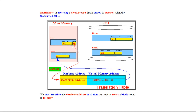If we look at the diagram, in the memory, when we require some object and we need to navigate from this object to the next object, we go to the database address, find the database address, and go to the translation table, where we convert it into a virtual memory address, and then come back and locate that object.